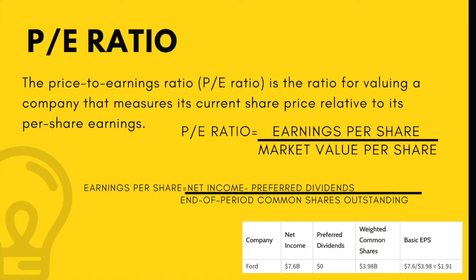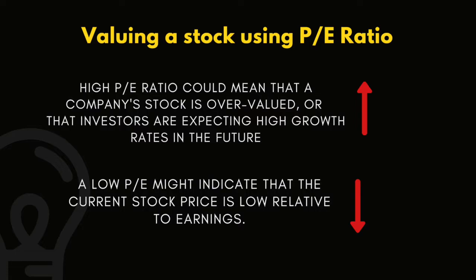PE ratios are used by investors and analysts to determine the relative value of a company's shares in an apple-to-apple comparison. A high PE ratio could mean that a company's stock is overvalued, or that investors are expecting high growth rates in the future. Companies that have no earnings or are losing money do not have a PE ratio, since there is nothing to put in the denominator of the formula.